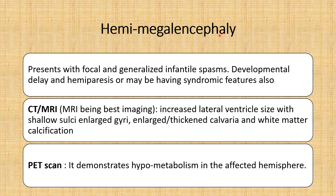In hemimegalencephaly, clinically the patient will have focal and sometimes generalized infantile spasms, developmental delay, hemiparesis, and may have some syndromic facial features. On CT/MRI, there is increased lateral ventricle size with shallow sulci, enlarged gyri, enlarged and thickened calvaria, and white matter calcification. On PET scan, it demonstrates hypometabolism in the affected hemisphere. These three are the radiological differential diagnoses.